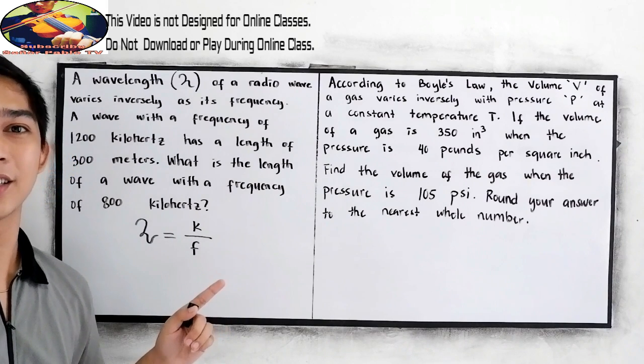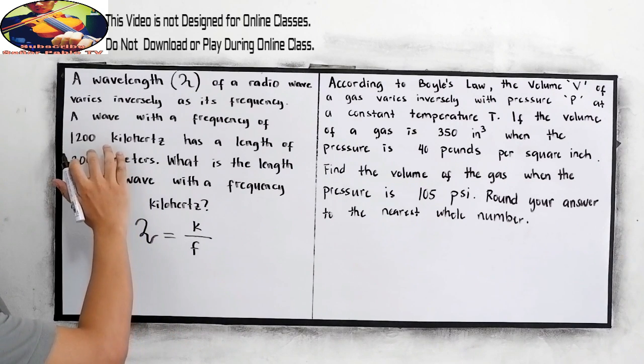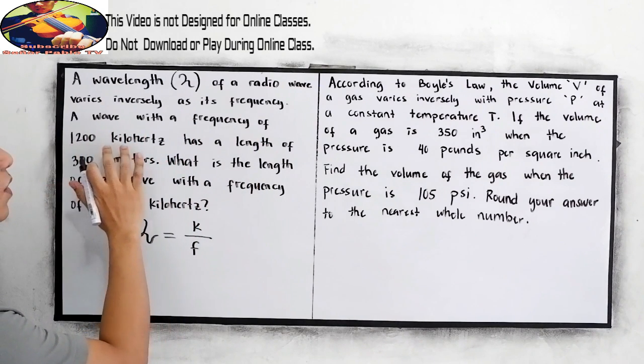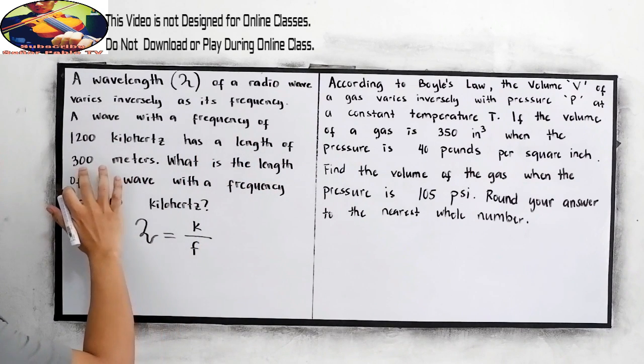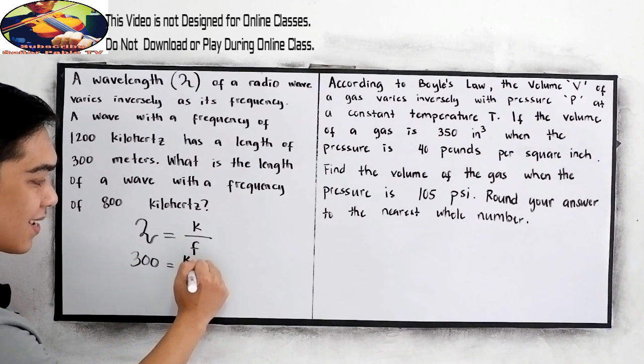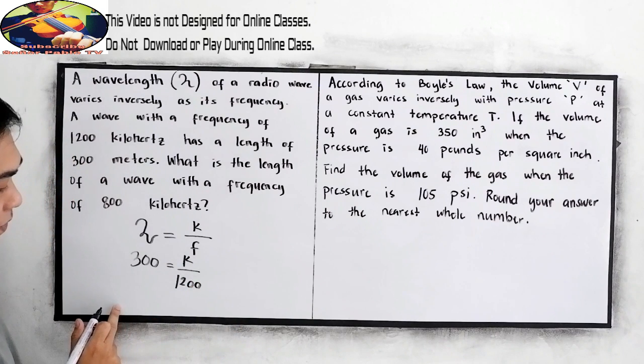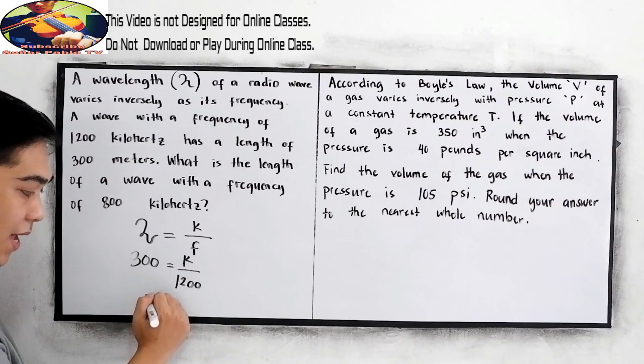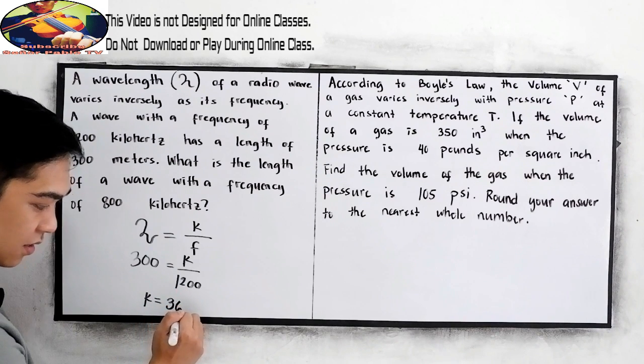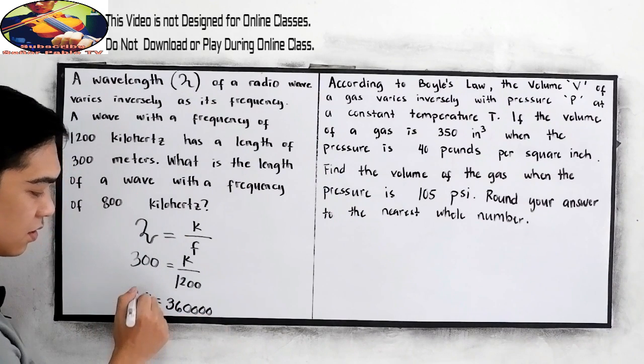Now, let's find the constant of variation. We need to substitute the value of our wavelength. A wave with a frequency of 1,200 kHz has a length of 300 meters. So, wavelength 300 meters equals K over frequency 1,200 kHz. To find K cross-multiply, so our K is 3 times 12, that is 36. Just copy the number of 0s, 1, 2, 3, 4.